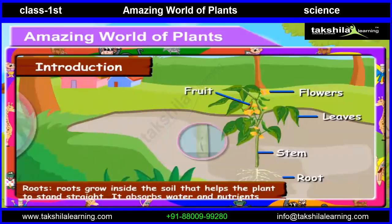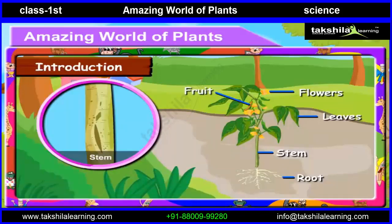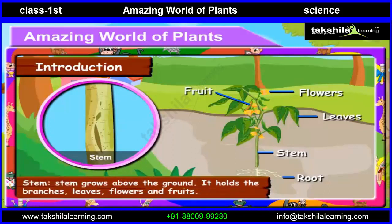Stem. Stem grows above the ground. It holds the branches, leaves, flowers and fruits.